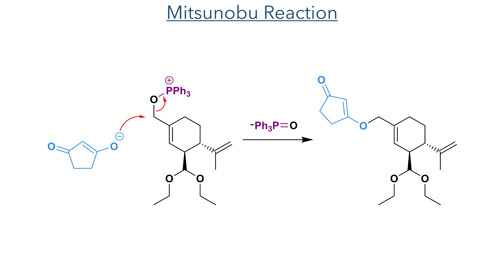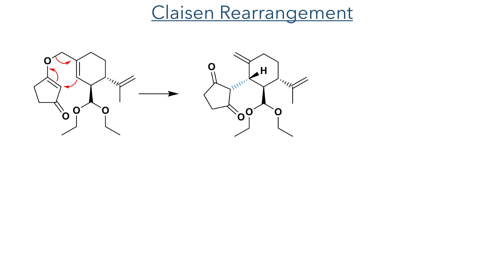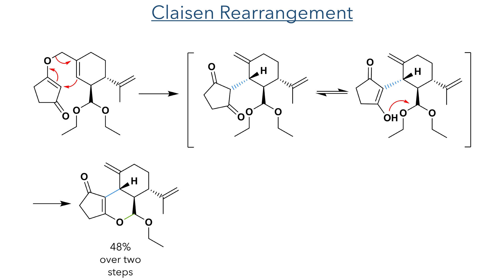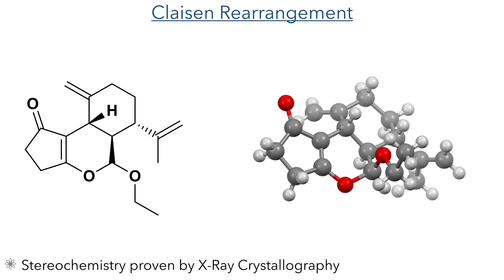This product was also taken forward without purification, where it was reacted in a Claisen rearrangement — a 3,3-sigmatropic rearrangement which creates a new carbon-carbon single bond together with the formation of a ketone and an exocyclic alkene. This diketone can tautomerise into its enol form, which is able to undergo transacetylisation with the diethyl acetal, forming the tricyclic target in a 48% yield over two steps. This reaction produced only one isomer, and this stereochemistry was proven by X-ray crystallography.